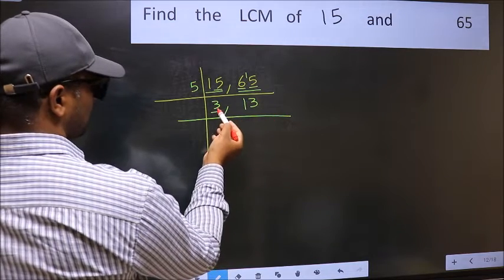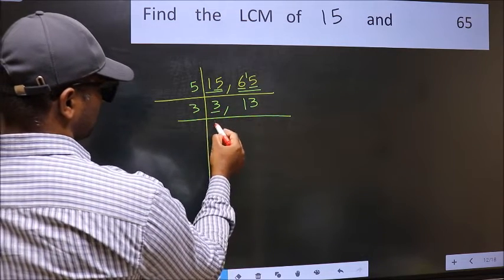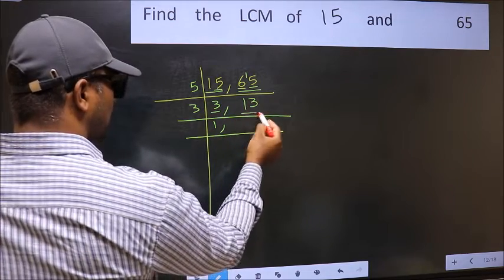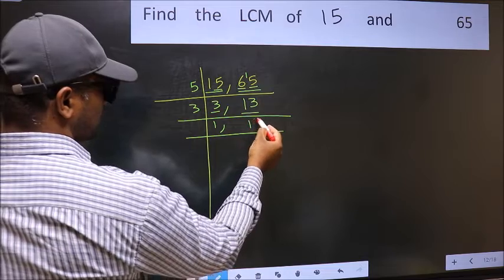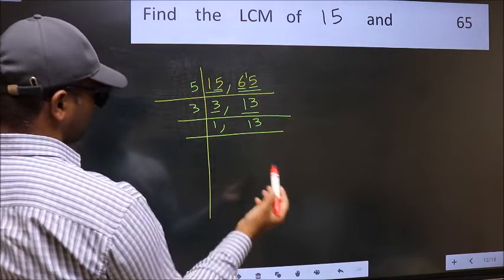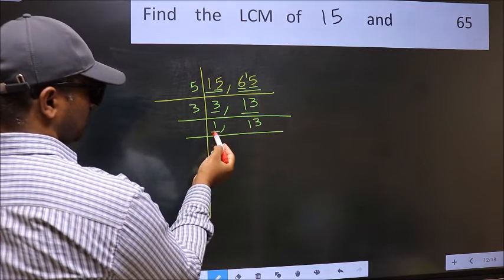Now here we have 3. 3 is a prime number, so 3 times 1 is 3. The other number 13 is not divisible by 3, so you write it down as it is. Now we got 1 here.